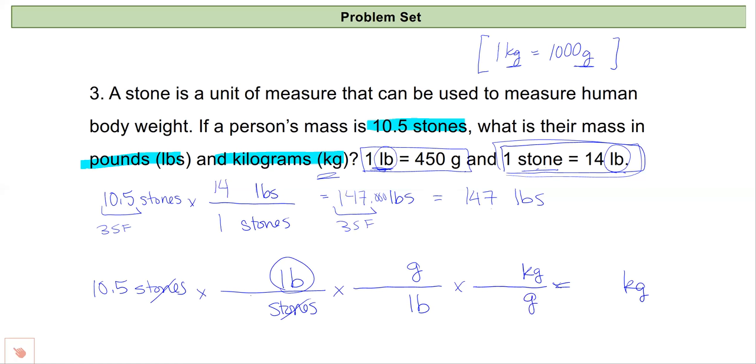So looking at this, my stones will cancel, my pounds will cancel, and my grams will cancel. And I'll be left with units of kilograms. So I'm going to now go in and plug in these values. So one stone equals 14 pounds. One pound equals 450 grams. And one kilogram equals 1,000 grams.